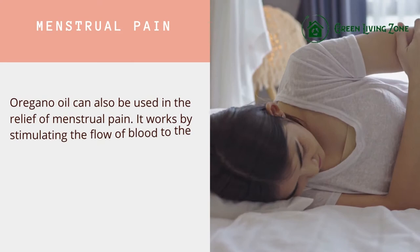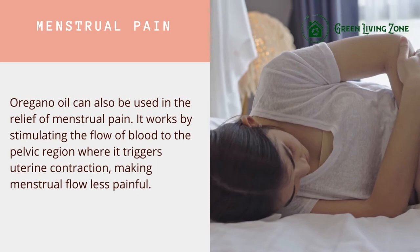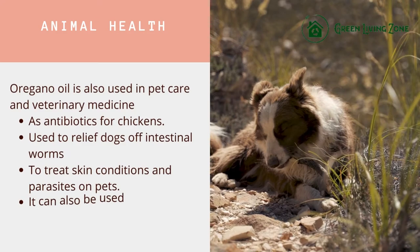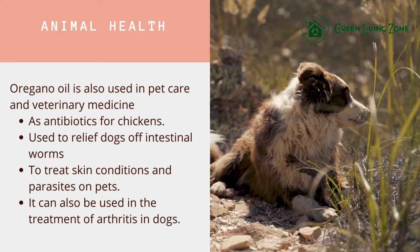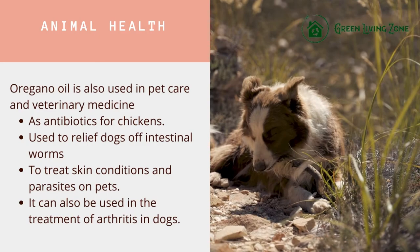Menstrual pain: oregano oil can be used for relief of menstrual pain. It works by stimulating blood flow to the pelvic region, triggering uterine contraction and making menstrual flow less painful. Animal health: oregano oil is also used in pet care and veterinary medicine — as antibiotics for chickens, to relieve dogs of intestinal worms, to treat skin conditions and parasites on pets, and even for arthritis in dogs.